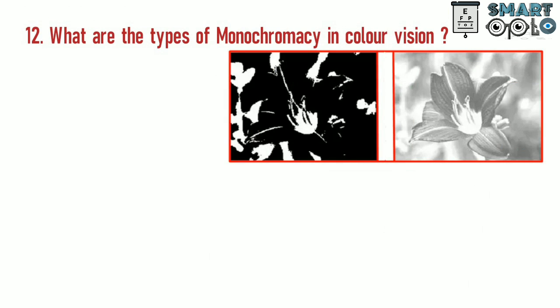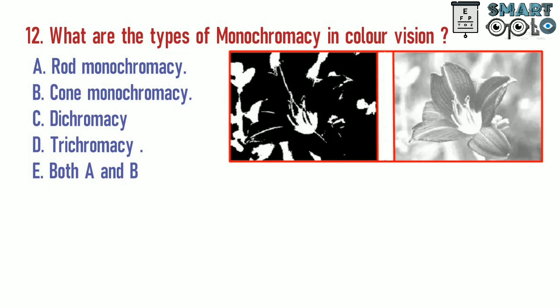Question 12. What are the types of monochromacy in color vision? A. Rod monochromacy. B. Cone monochromacy. C. Dichromacy. D. Trichromacy. E. Both A and B.